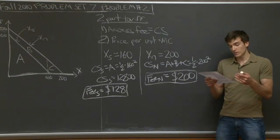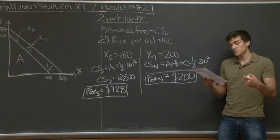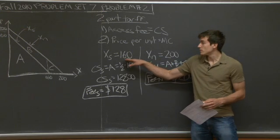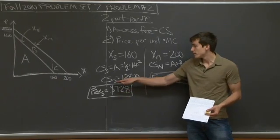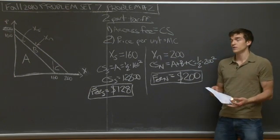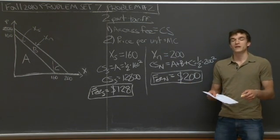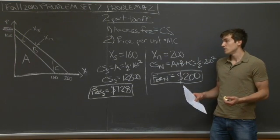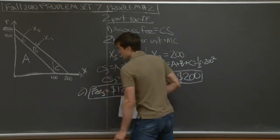Part C asks what is the maximum price that students are willing to pay for the 160-song bundle. If we charge them more than their consumer surplus of $128, they'll just drop out of the market — they'll say you're taking away all the benefit plus an extra penny, so they'll take their money elsewhere. The maximum price you can charge a student for the 160-song bundle is $128.